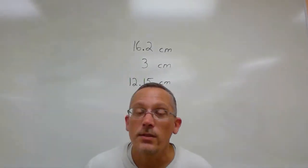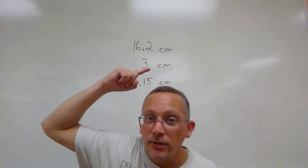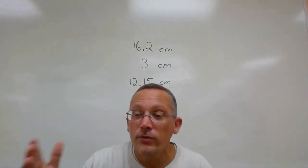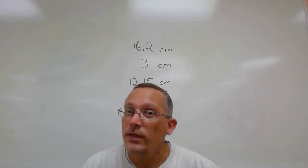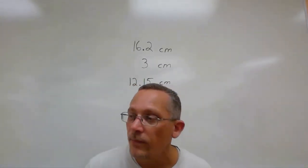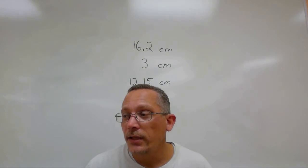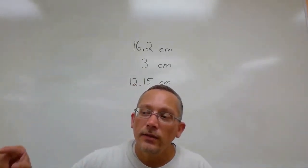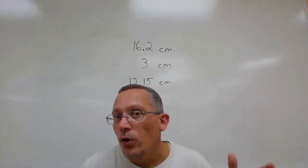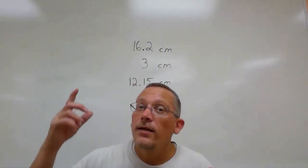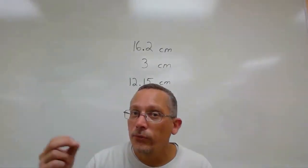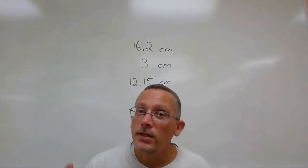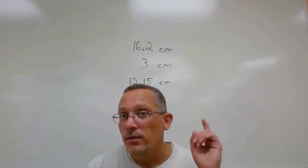When we report measurements in science, it's very important to keep our numbers straight so readers know what accuracy of instrument was used. In physics we do lots of calculations involving measurements, and we need to track that accuracy through our calculations. The first step is to understand something called significant digits.